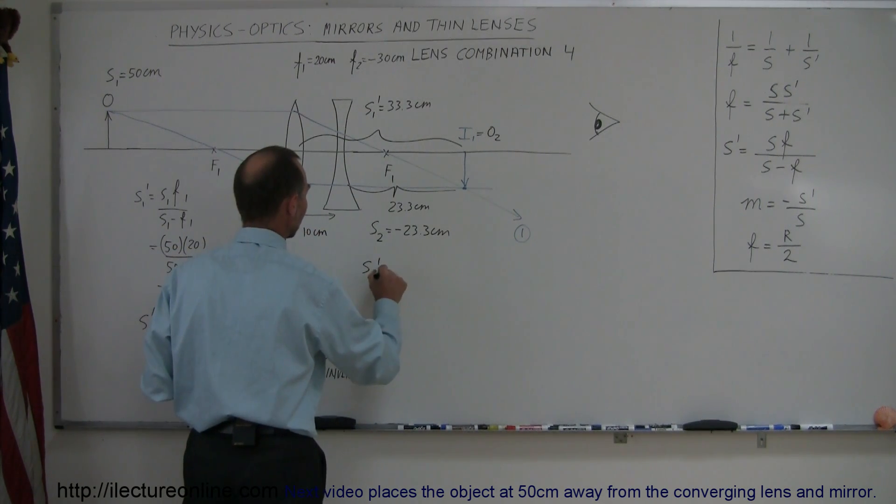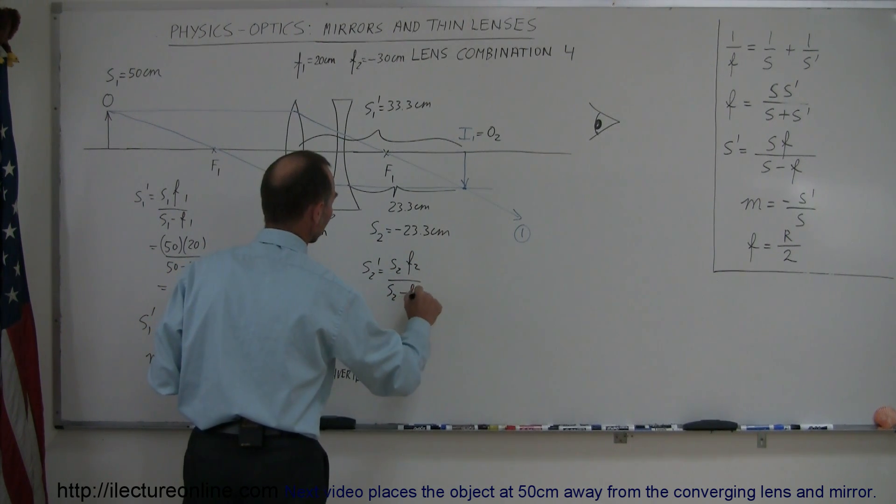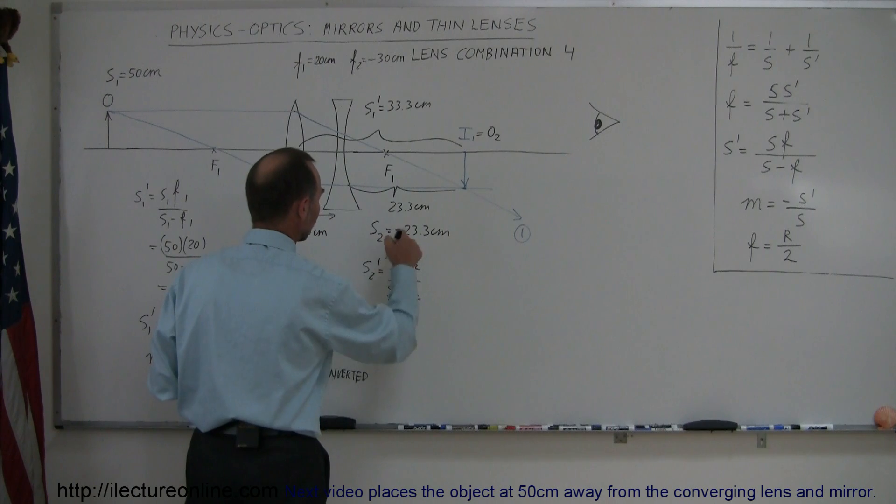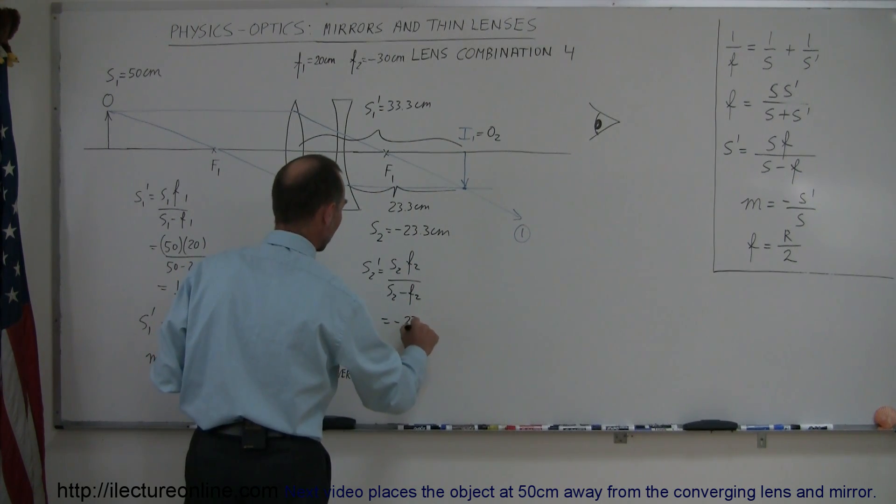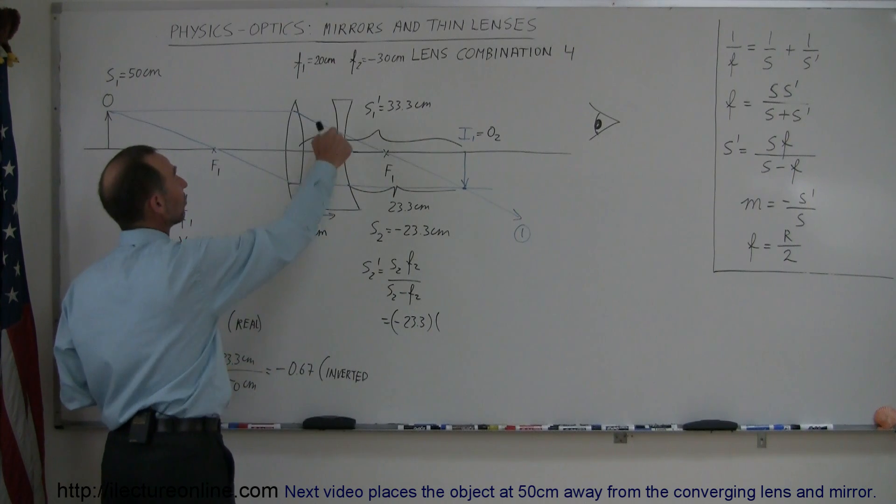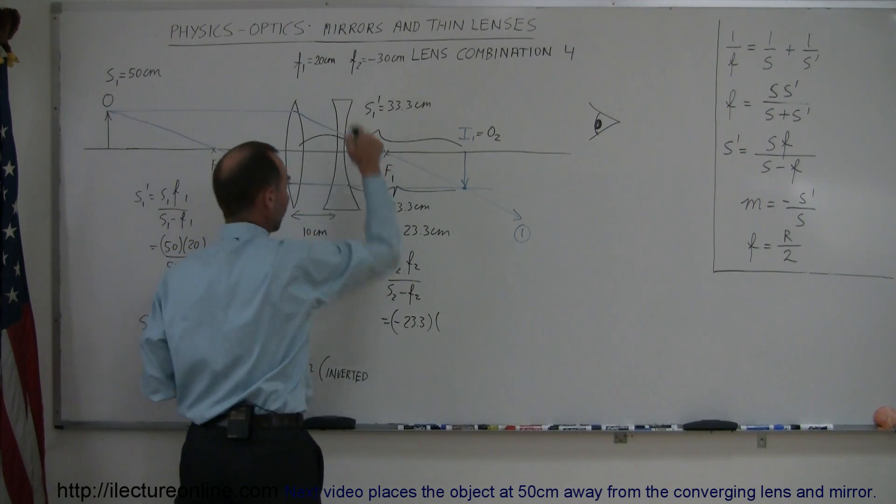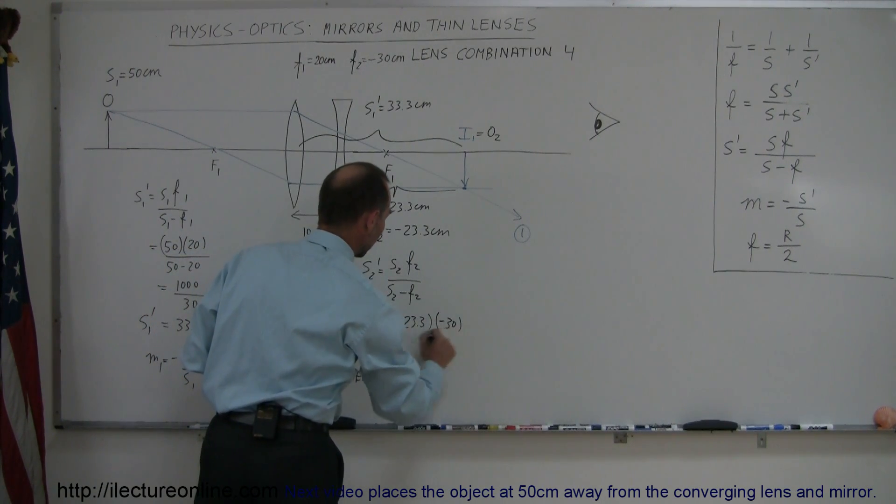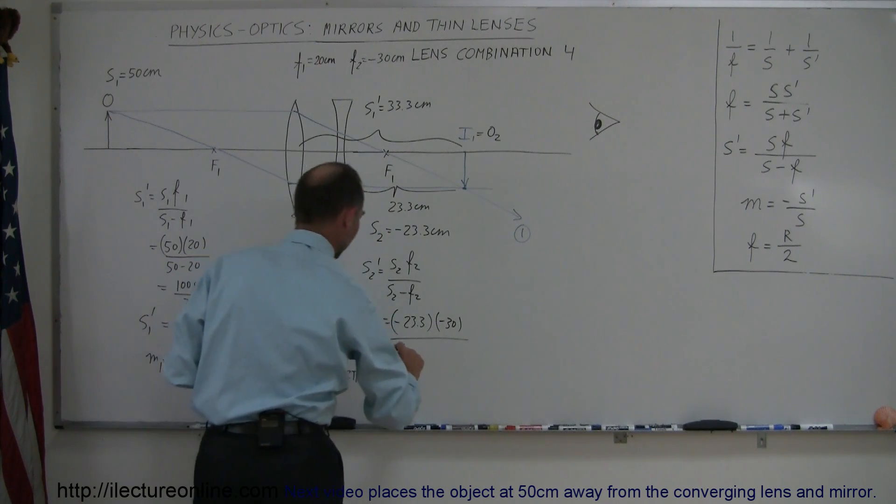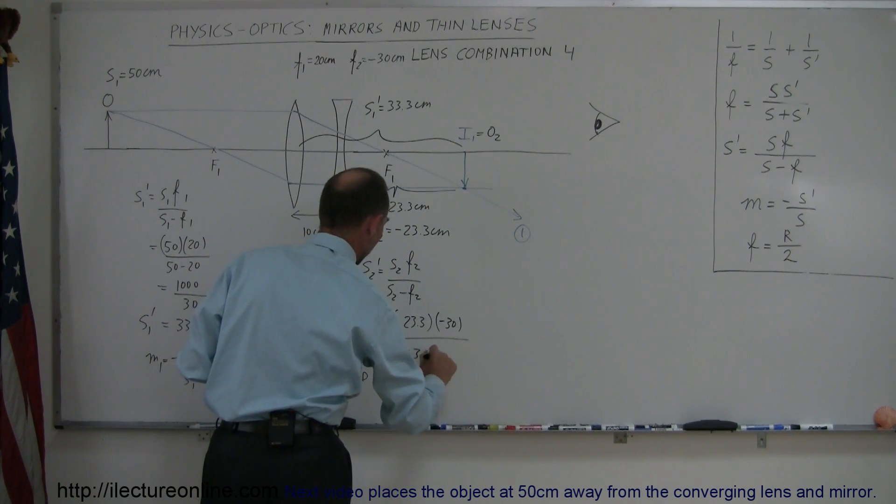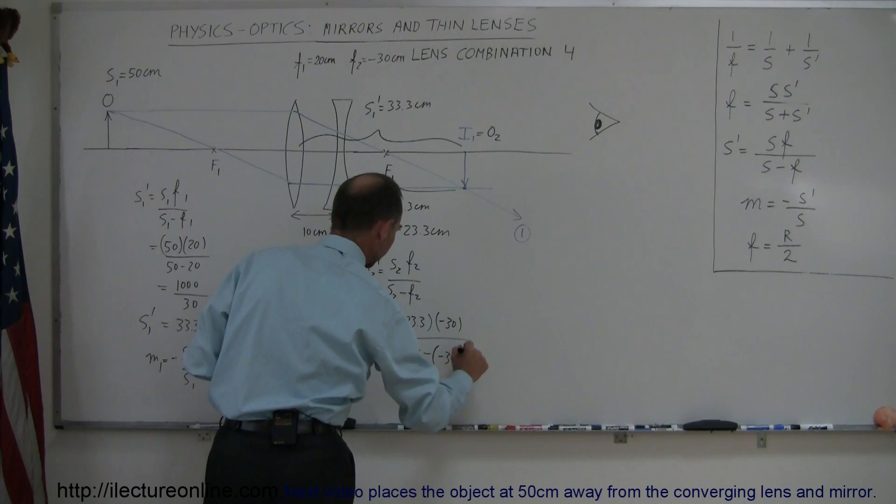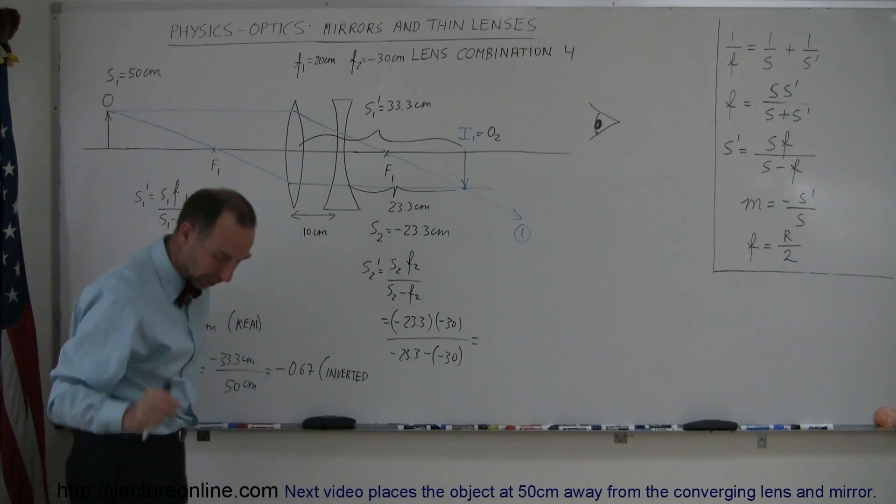So we have S2' equals S2 F2 divided by S2 minus F2. It equals S2 which is minus 23.3 multiplied times F2. In this case, since the diverging lens has a negative focal length of minus 30, divided by S2 which is minus 23.3 minus a minus 30.